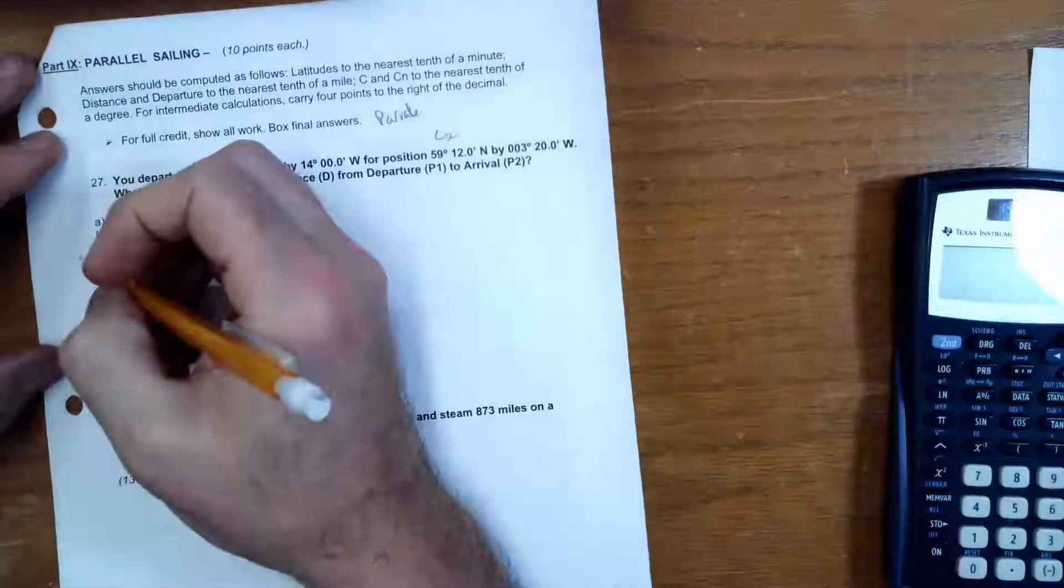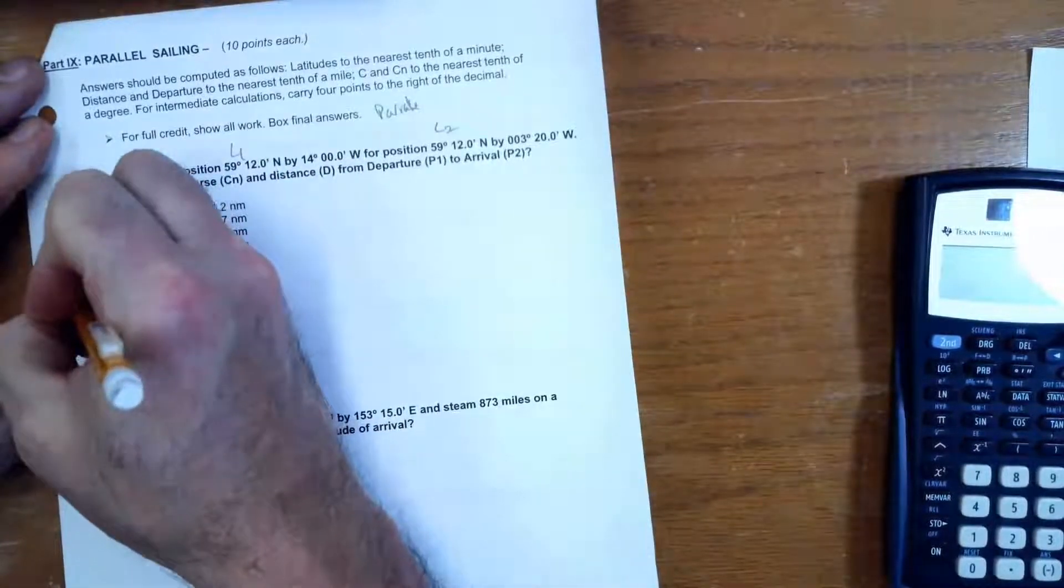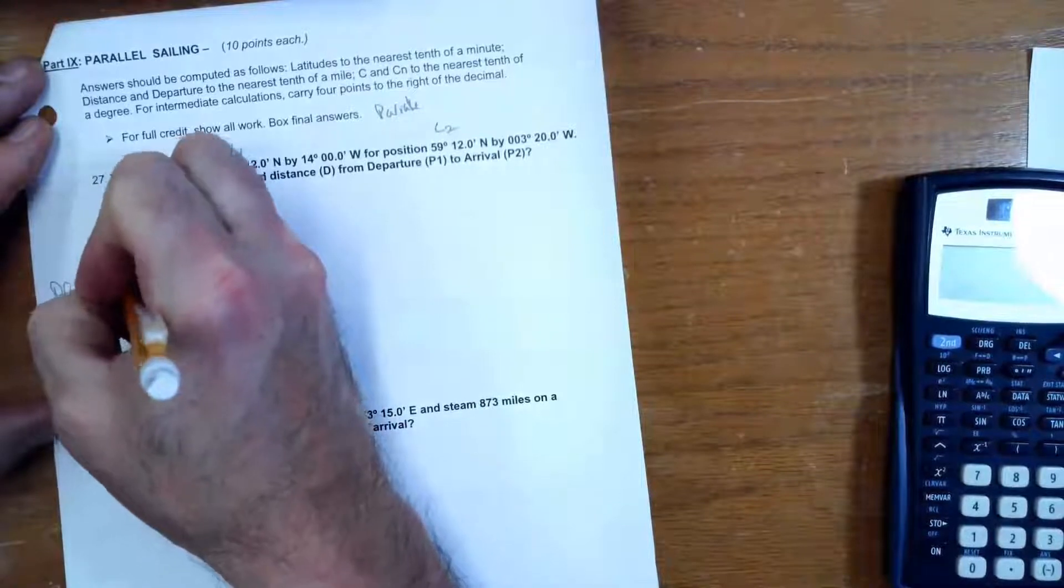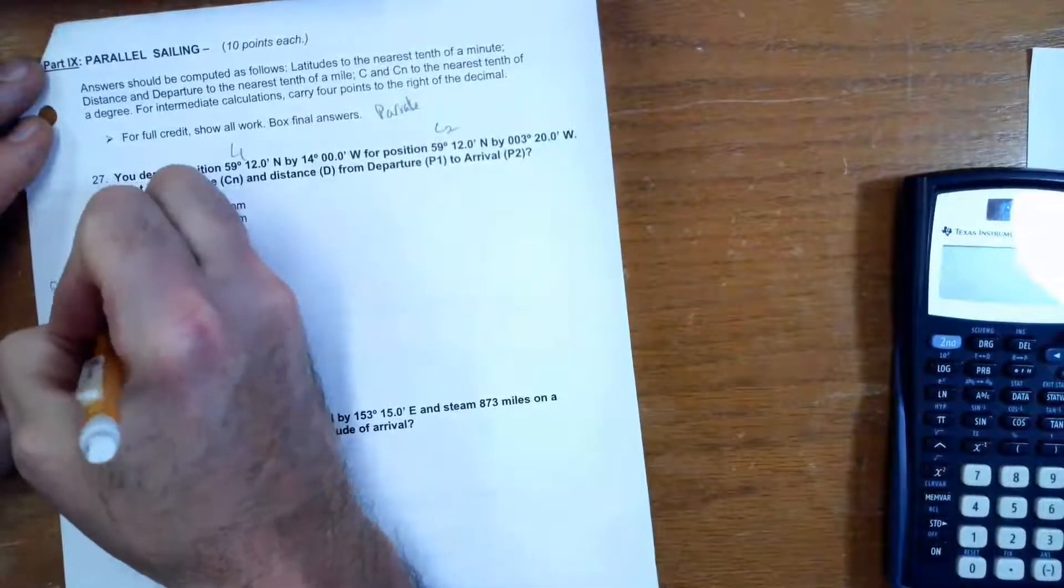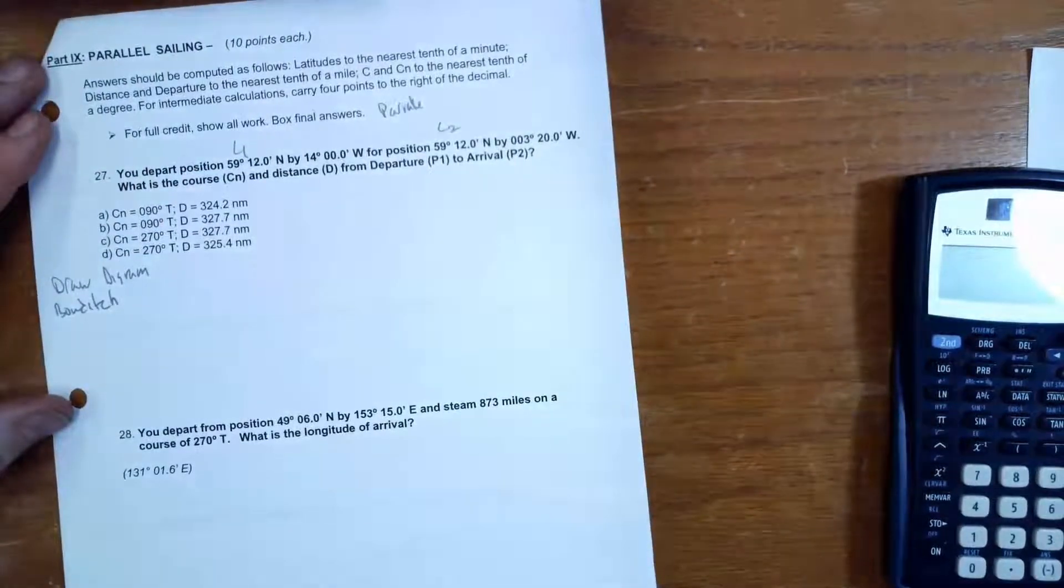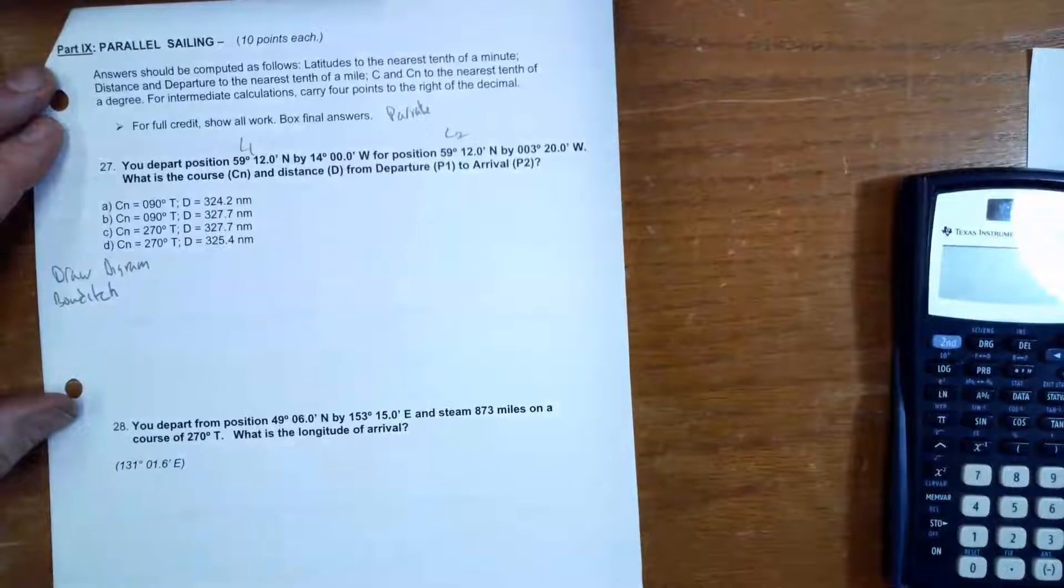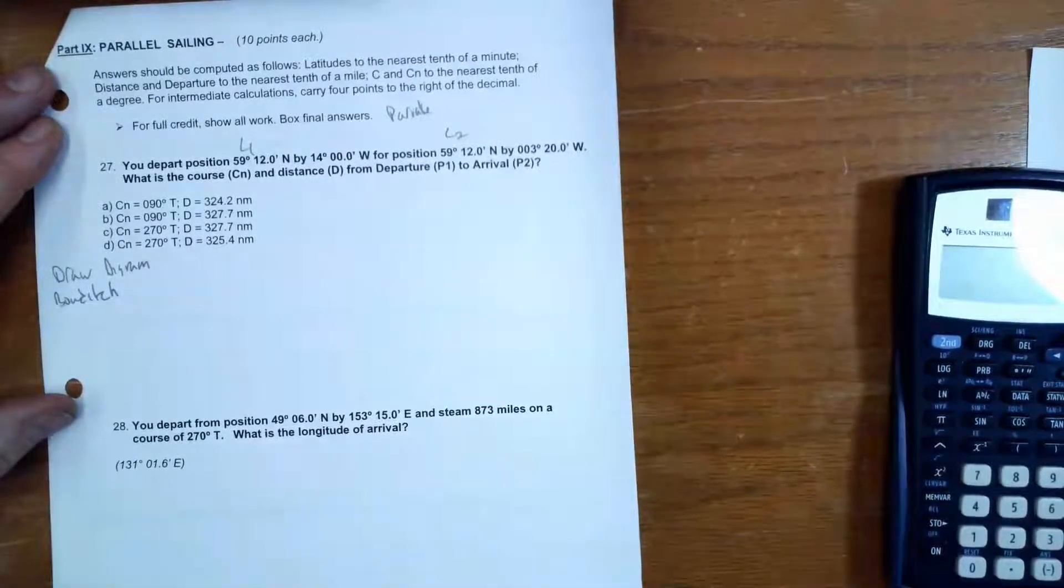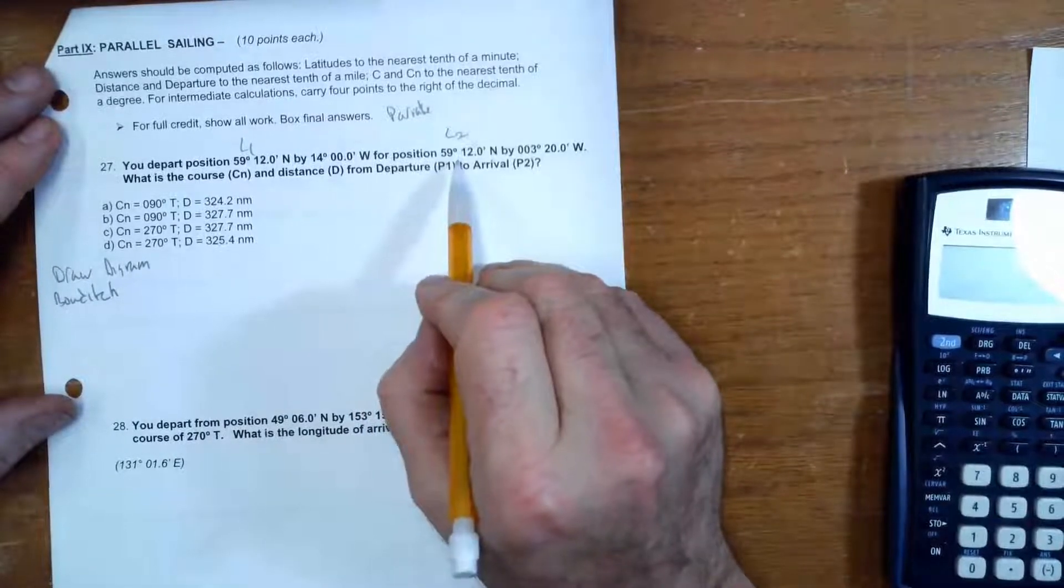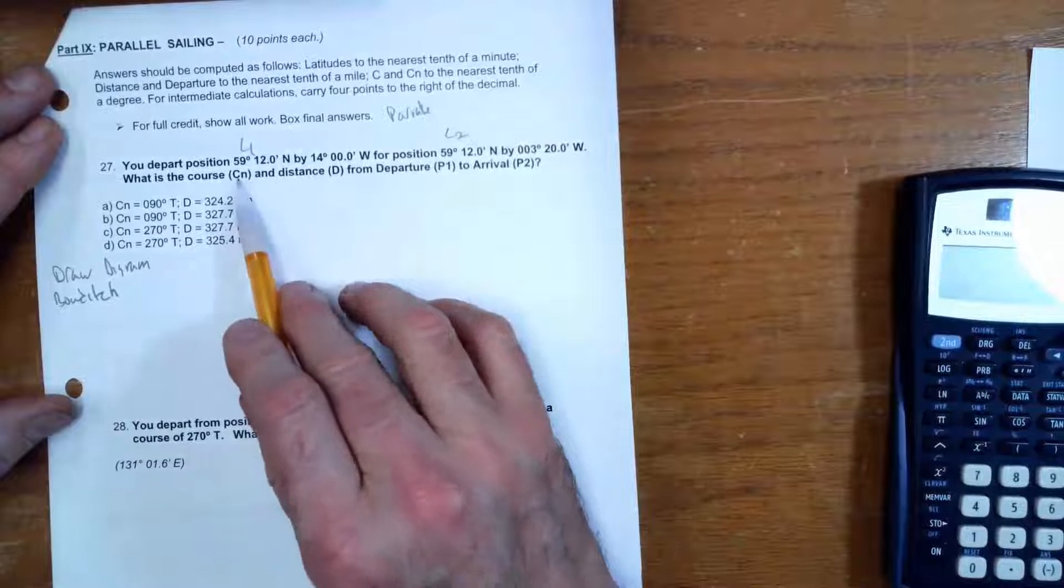So I want to draw my diagram. I always want to start off with a diagram, and then I'm going to go to Bowditch. It turns out this is parallel sailing, which means we're staying on one parallel. So our latitude is never going to change as long as we go east or west.